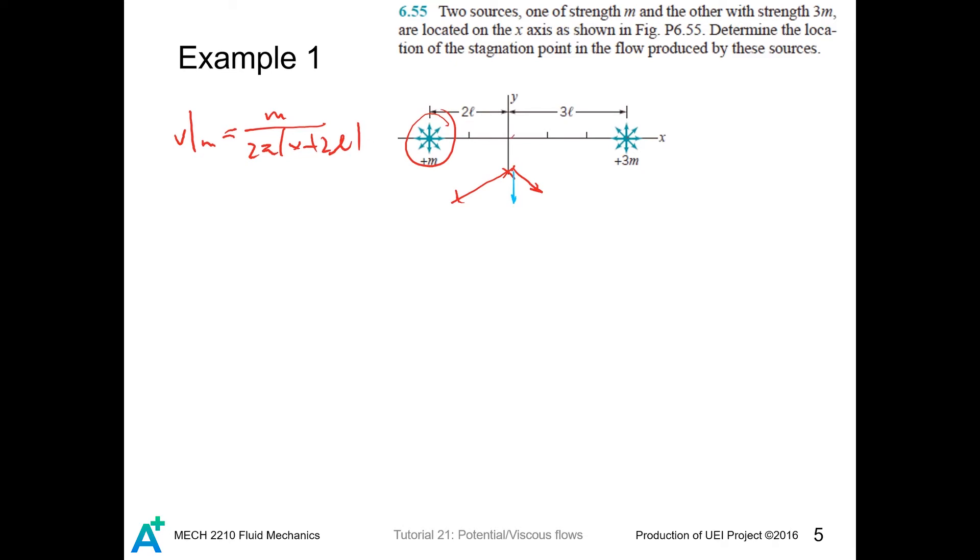To verify this is true, let's take the origin. Then the distance between the two points is 2L, so we have m divided by 2pi times theta divided by 2L. Similarly, the velocity contributed by this guy is given by this expression. They will sum the two velocities and set that equal to 0. And that implies this result, so that implies...